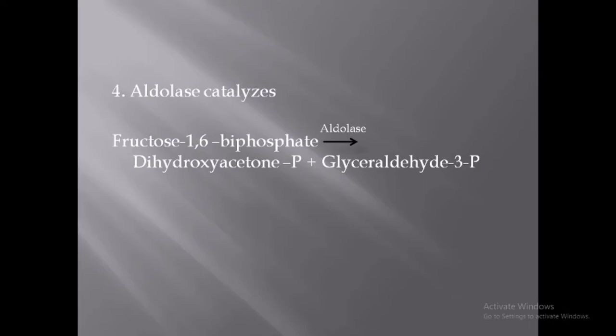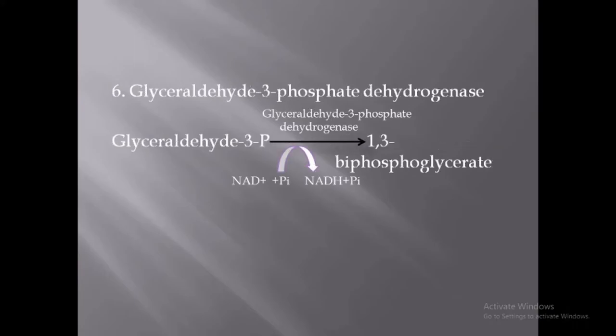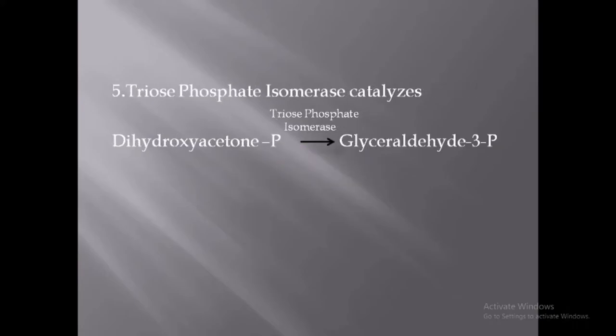In the fifth step, dihydroxyacetone phosphate is converted to glyceraldehyde-3-phosphate with the help of the enzyme triose phosphate isomerase. This enzyme is inhibited by bromohydroxyacetone phosphate.